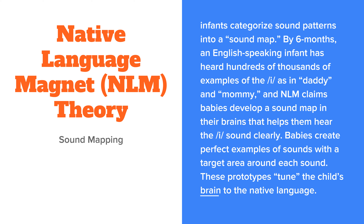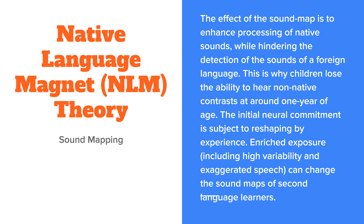It's almost a style of threshold — within a certain threshold, children are able to hear these specific sounds. The effect of the sound map is to enhance processing of native sounds while hindering the detection of sounds of a foreign language. They're able to discern their parents speaking to them in a crowd of many other speakers, and that's essentially what Native Language Magnet Theory is: we are tuning our hearing to be able to hear these sounds. This is why children lose the ability to hear non-native contrasts at around one year of age — they essentially remove these contrasts from their sound map.